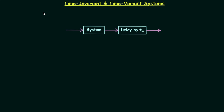Till now we have completed static and dynamic systems, causal and non-causal systems, and the next classification is time-invariant and time-variant systems. In this presentation we are going to discuss what are time-invariant and time-variant systems. This property is very important because we will also use it in LTI systems — linear time-invariant systems.